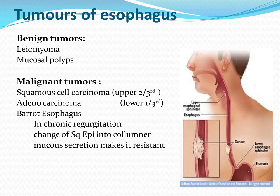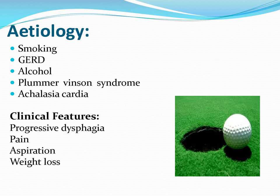Barrett's esophagus: in chronic regurgitation, inflammation of the lower one-third of the esophagus leads to a change of epithelium from squamous to columnar epithelium, which is more resistant to acid because of mucus secretions. This epithelial change can later lead to malignant tumor formation. It is commonly seen in smokers, alcohol users, those with Plummer-Vinson syndrome, and achalasia cardia.